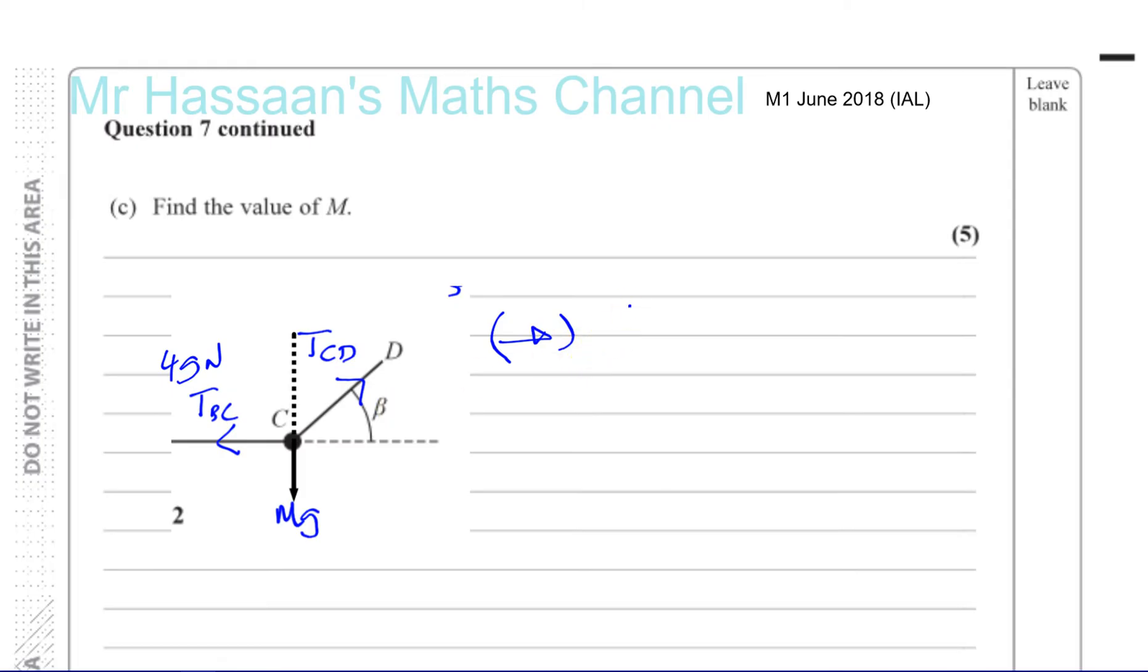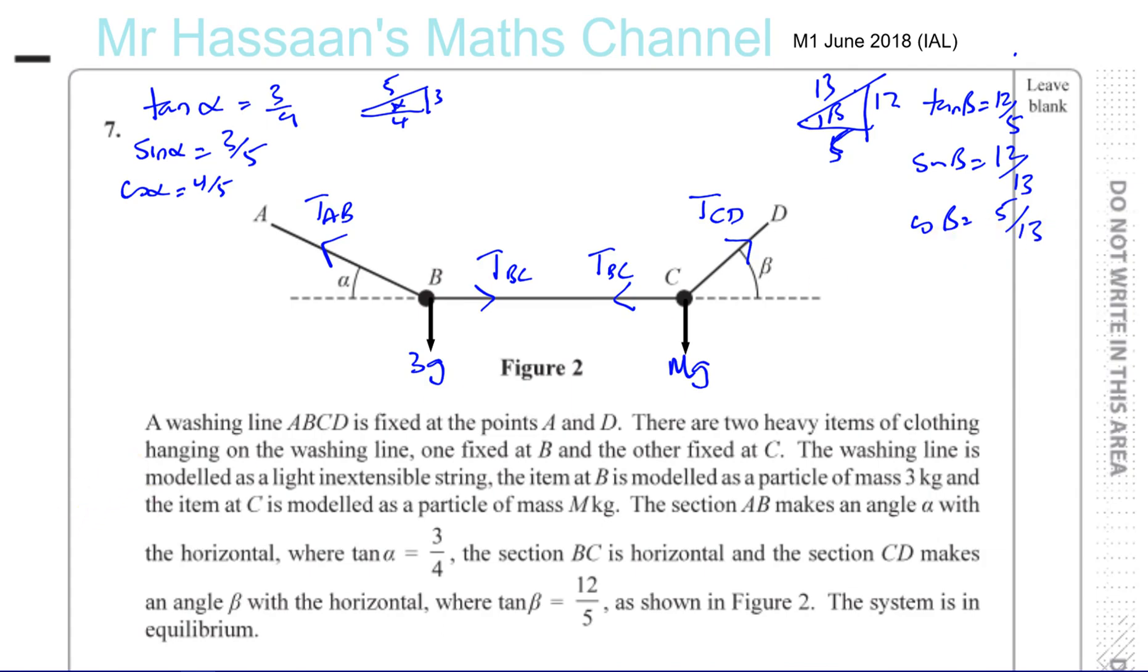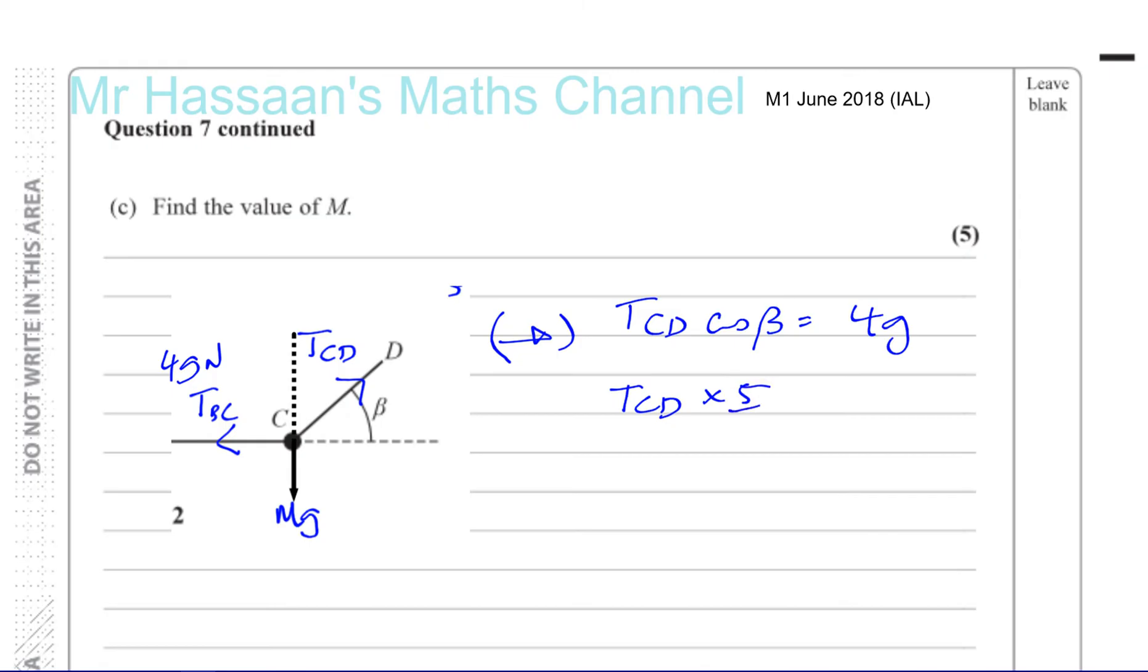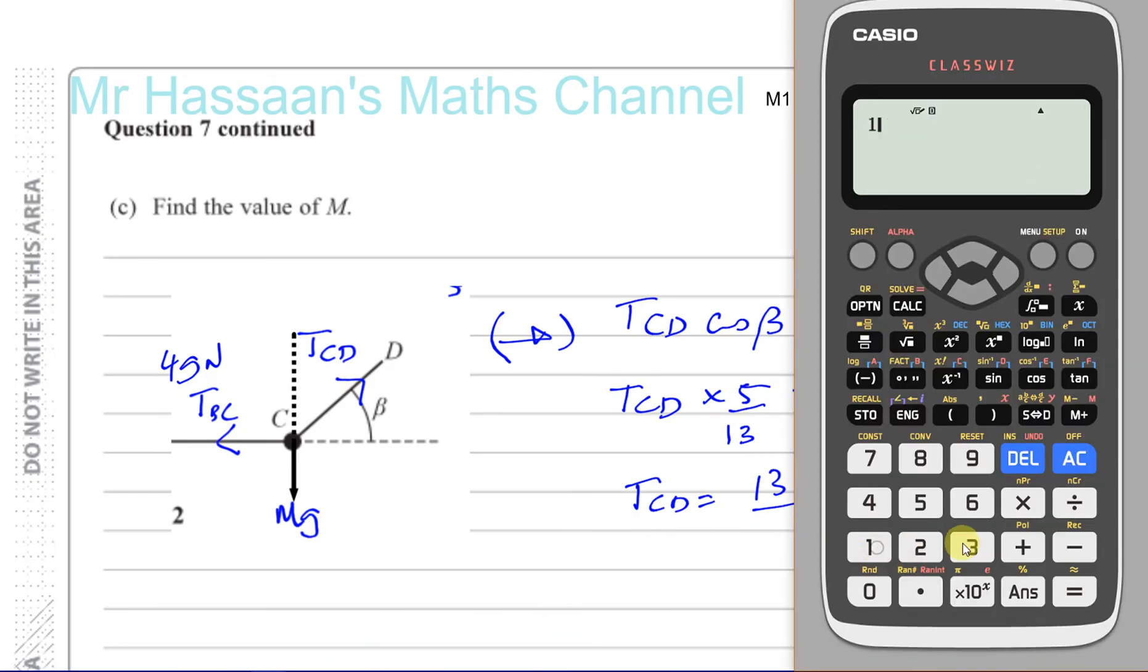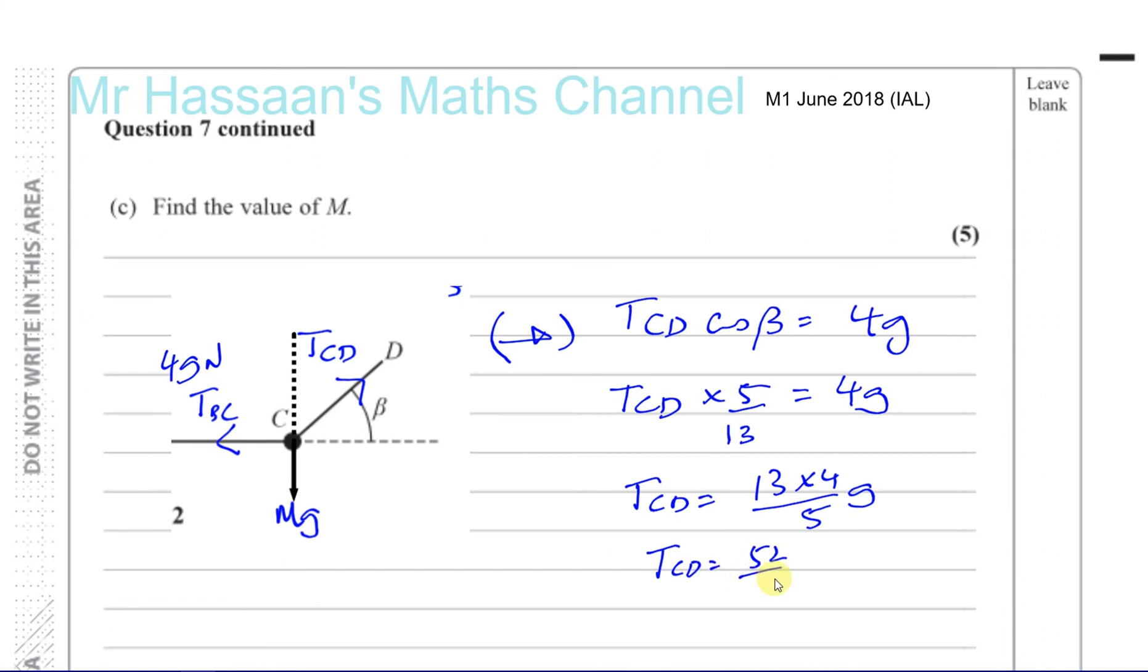Let's resolve horizontally. I can say the tension in CD times cosine of beta is equal to 4 G Newtons, tension in BC. So the tension in CD times... Now, the cosine of beta was 5 over 13. So this is times 5 over 13 is equal to 4 G. So the tension in CD is going to be 13 times 4 over 5. 13 times 4 over 5 G. So 13 times 4 divided by 5, which gives you 52 over 5 G. Tension in CD is 52 over 5 G. That's not our answer, though. We have to find the value of M. This is a step to our answer.